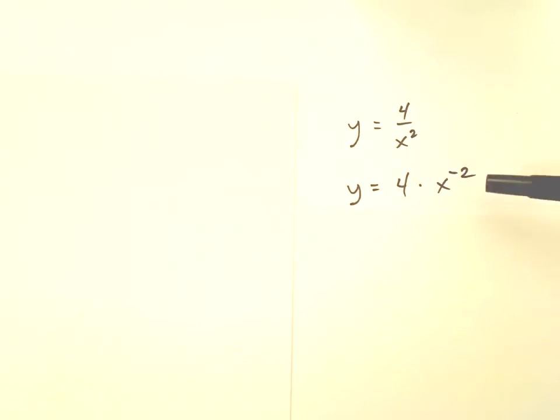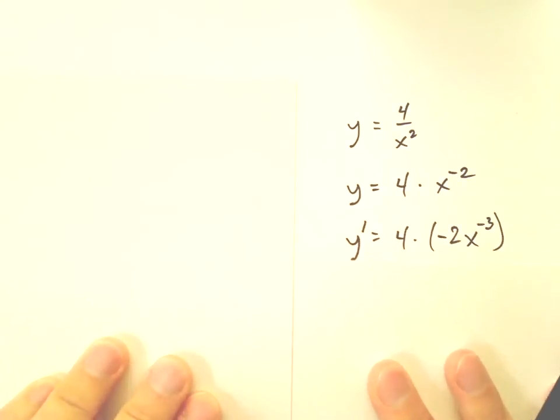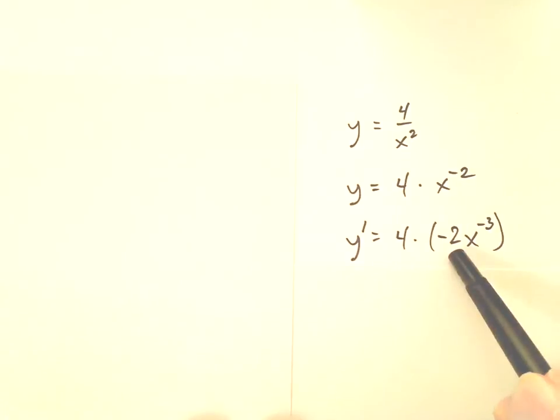It doesn't even remotely resemble a quotient rule problem now. It's just another power rule problem. Derivative of that, of course, y prime equals 4 times the derivative of x to the negative 2. Multiply the negative 2 in front, subtract 1 from the negative 2 to give you a negative 3 power, and once again you're mostly done.